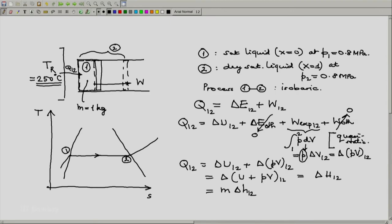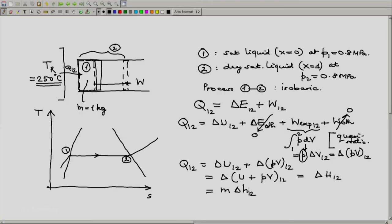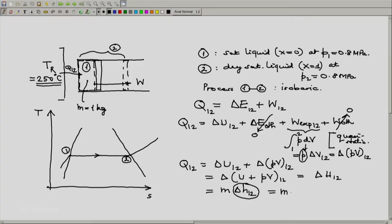Expanding this, this is mass of the system into change in the specific enthalpy. And since state 1 is saturated liquid, state 2 is dry saturated vapor, this delta H12 will be HFG as tabulated in our steam tables at 0.8 megapascal.